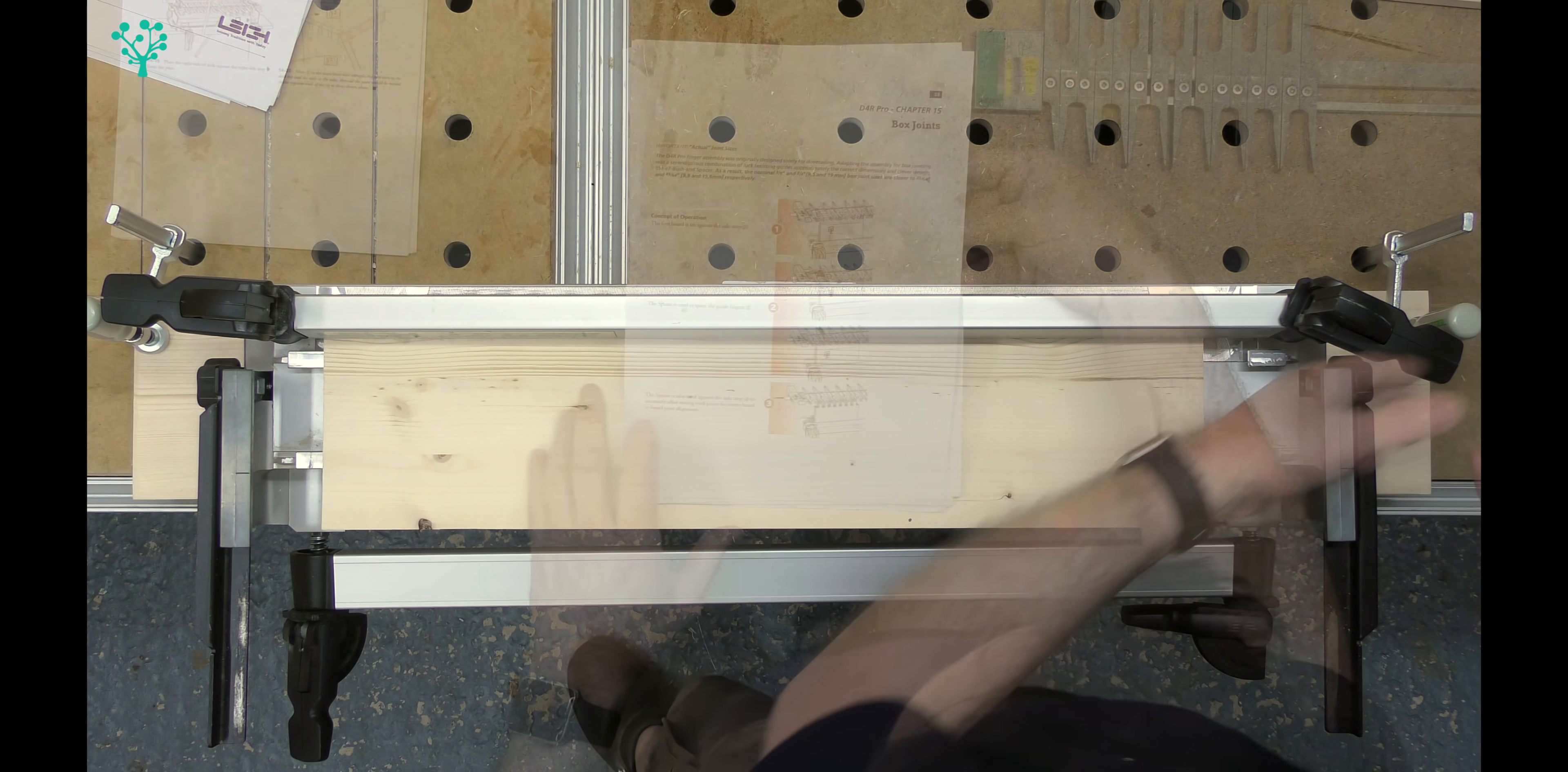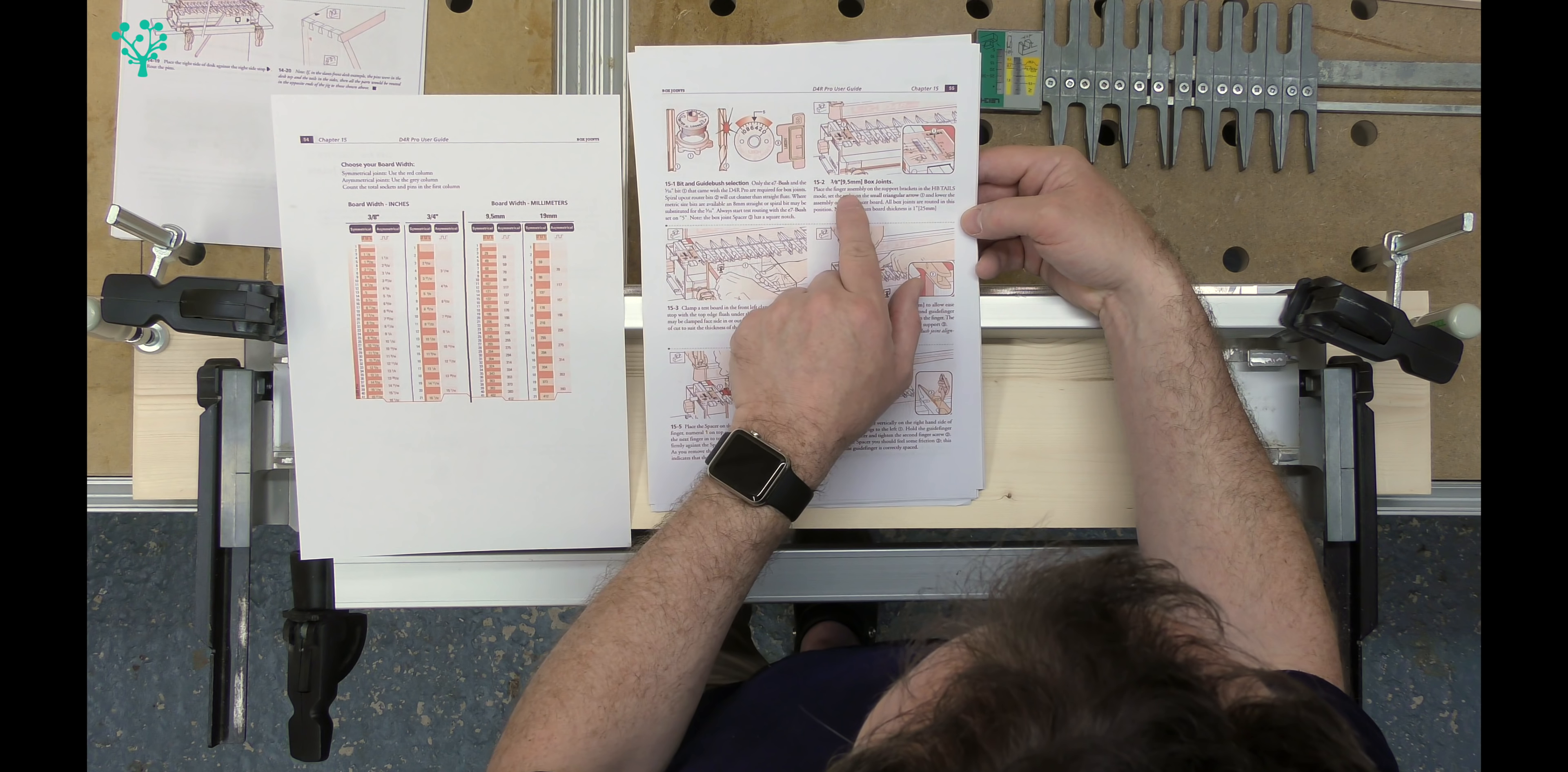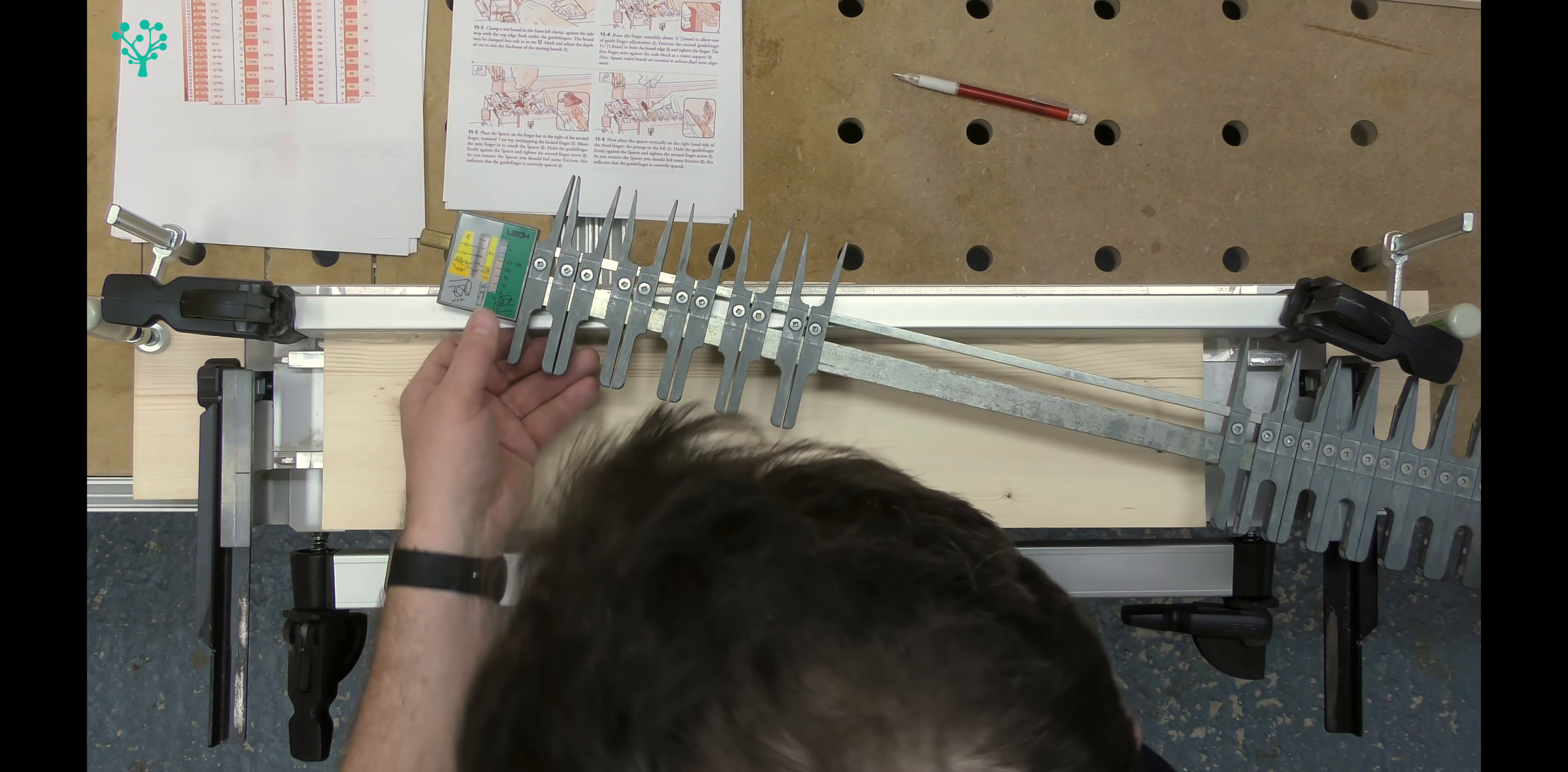The information about the box joint starts on chapter 15, which is page 53 of our manual. If you flick over to page 55 and look at paragraph 15.2, it will tell you that you need to use your finger assembly on the support brackets in the half blind tails mode, which is this symbol here. You want that symbol, the one on the green scale, facing upwards and to your left.